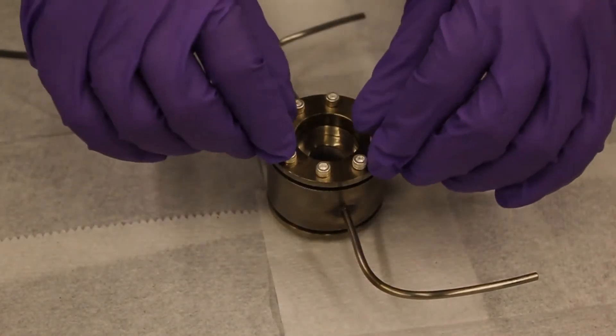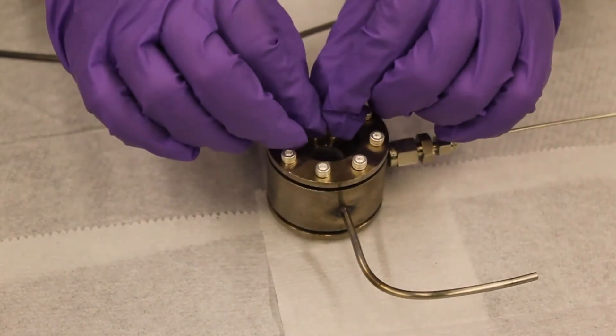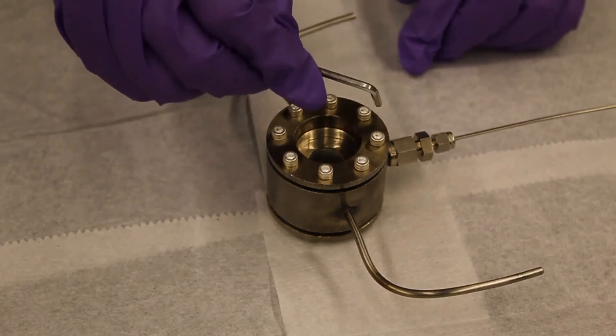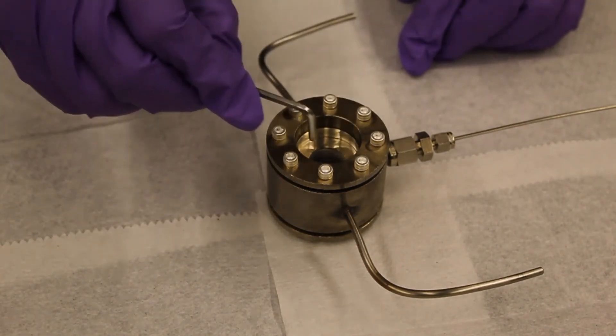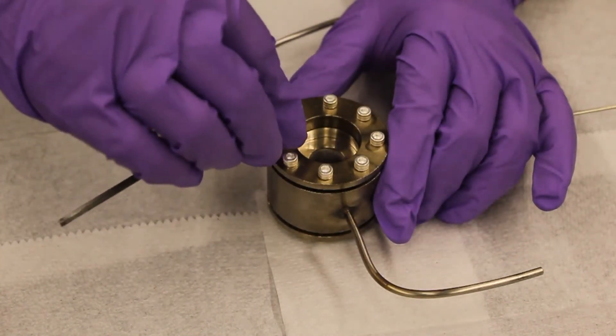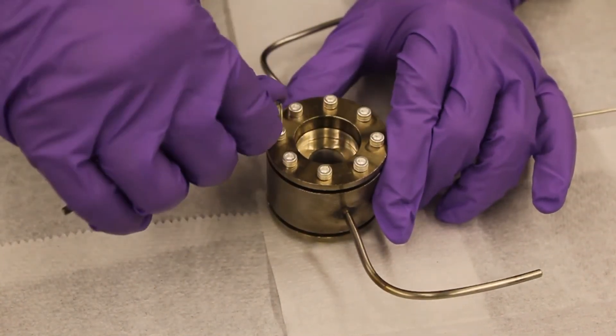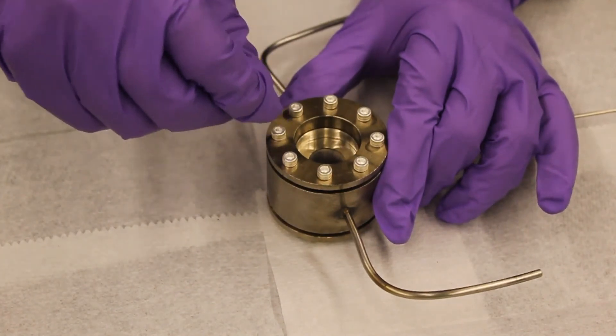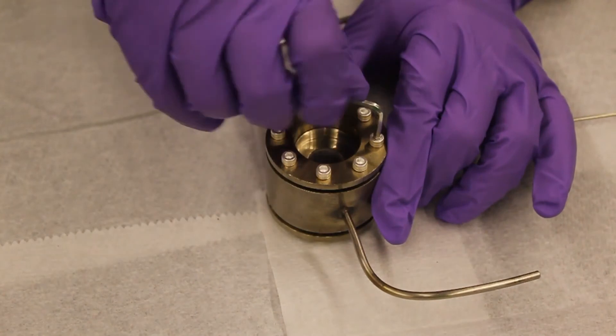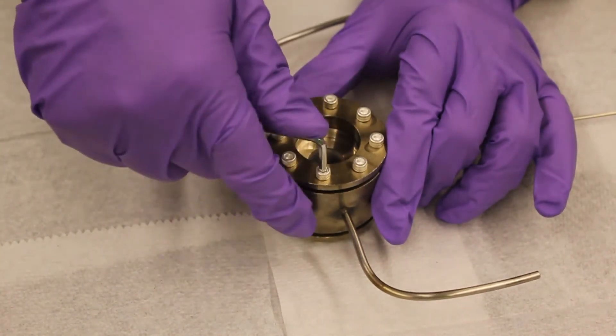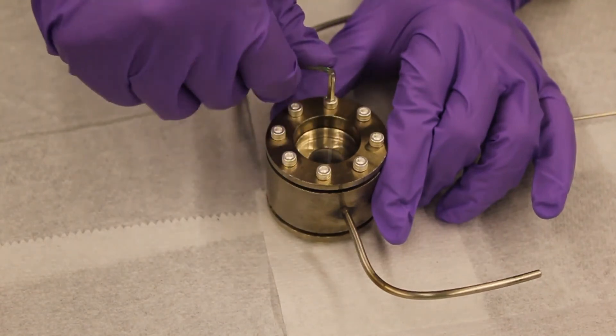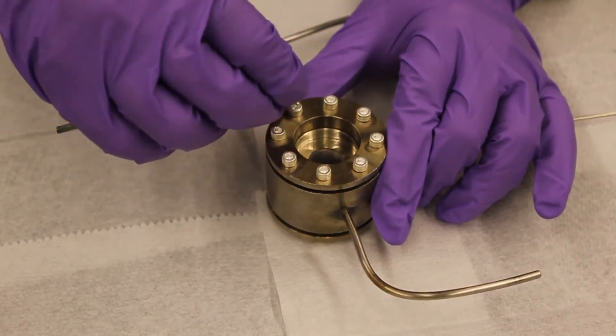To keep everything aligned, first we make sure all screws are finger tight. Next, we use the Allen wrench to tighten the eight screws sequentially. We suggest tightening the opposite screws a quarter turn at each time until the ferrule backer sits snugly. After each round of tightening, you should wait for the graphite to relax before the next round of tightening.